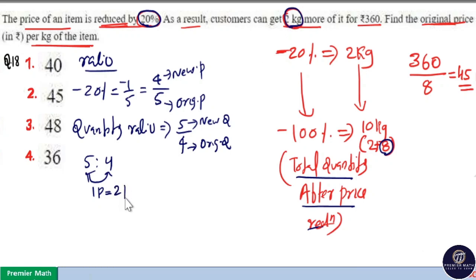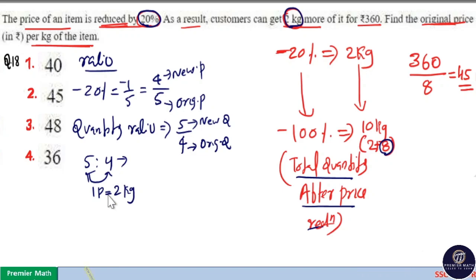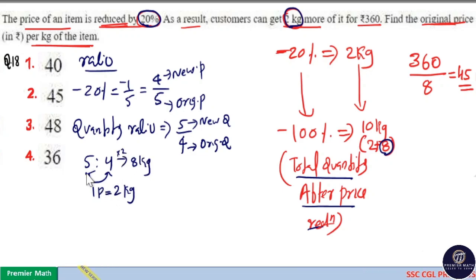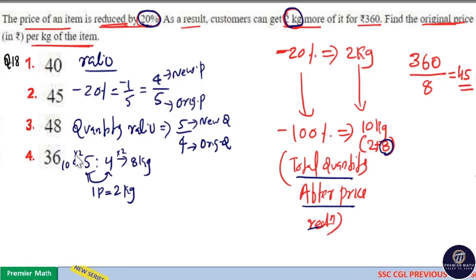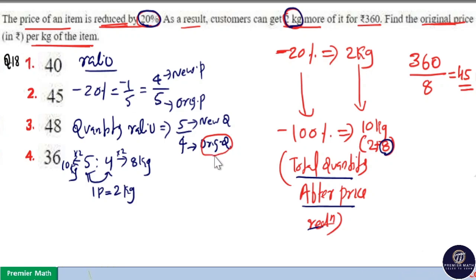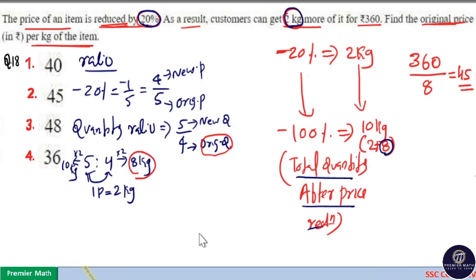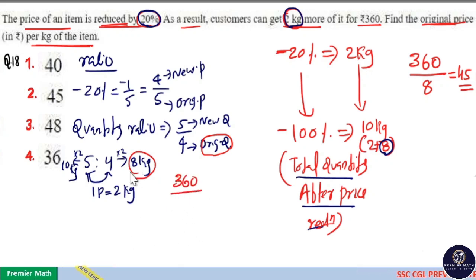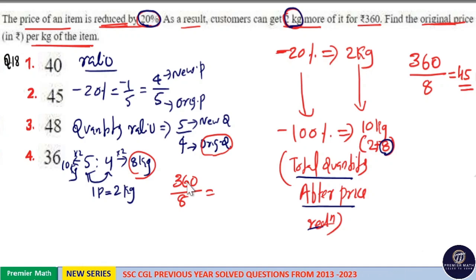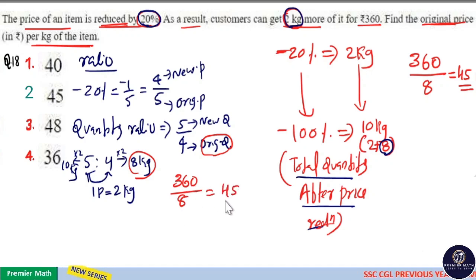That is, the additional amount is 2 kilogram. Which means 4 parts is equal to 4 into 2, that is 8 kilogram, and 5 parts is equal to 5 into 2, that is 10 kilogram. We need the original quantity. Original quantity is 4 parts, which is equal to 8 kilogram. So total price is 360 rupees and original quantity is 8 kilogram, so 360 by 8 is equal to 45 rupees.